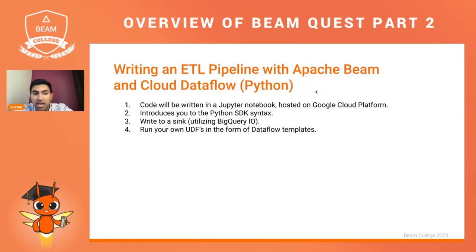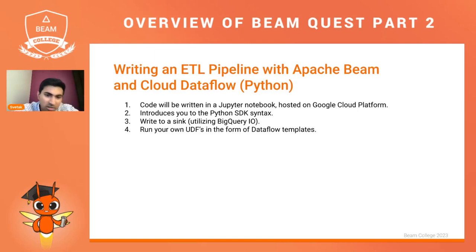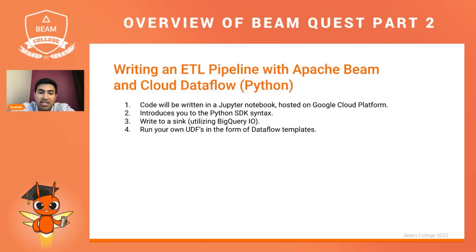Finally, the last lab is about running an ETL pipeline in Apache Beam and running it on the Cloud Dataflow runner. This is very analogous to the first lab — except that one was in Java, and this one will be in Python. The code will be written in a notebook hosted and run on Google Cloud Platform infrastructure. One key aspect is that it introduces the Python SDK syntax, which is a little different from Java. We've tried to make our SDKs mesh well with their native languages. In this lab, you'll write to a sink using BigQuery's I/O connector, and similar to lab one, you'll write your own user-defined function and run it as a Dataflow template.